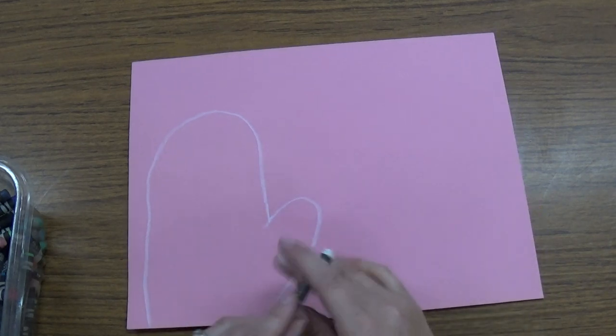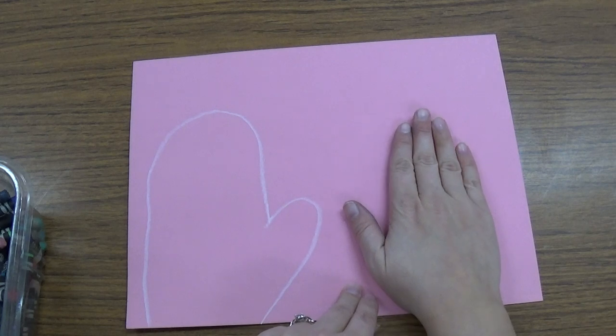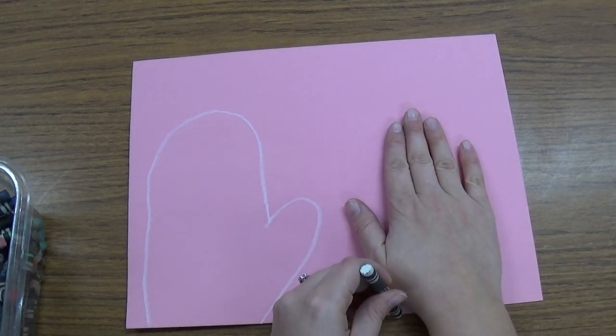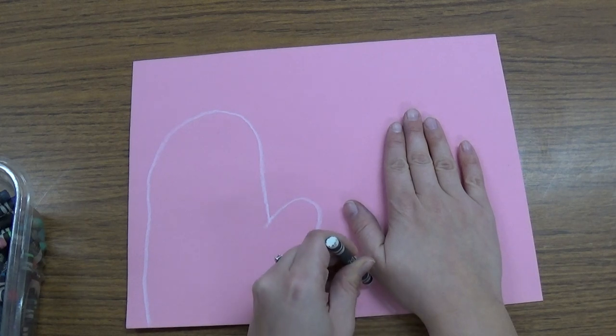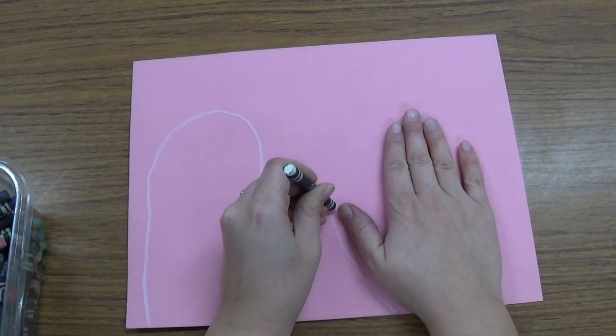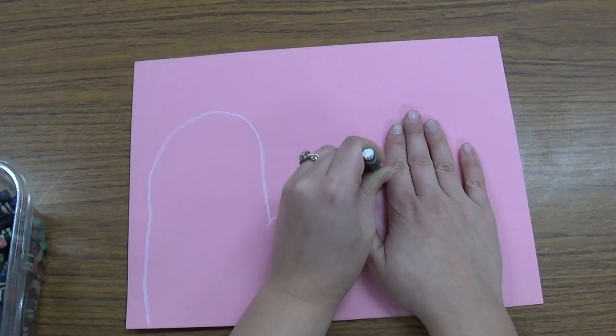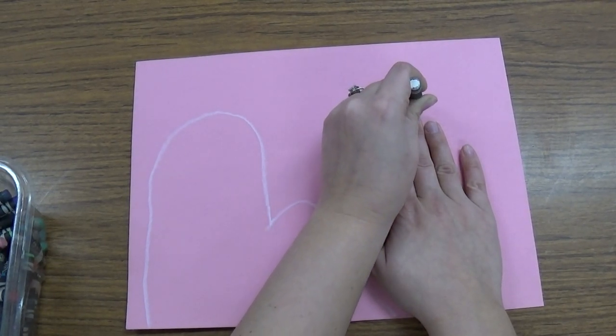And then I'm going to do my other hand and if you can't trace it yourself, you can have a friend help you. That's a great thing to help your friends. So I'm going to use the same crayon and I'm going to trace right around and make a mitten that's the right size for my hand.